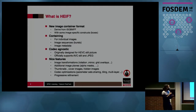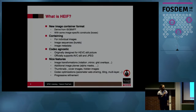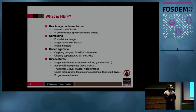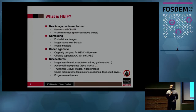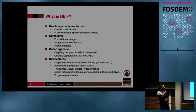So, what is HEIF? HEIF is a new image container format. It's derived from ISO BMFF, with some image-specific constructs and boxes. It may contain individual images, image sequences like bursts, or image metadata. It's codec agnostic, originally designed for HEVC still pictures, and officially supports HEVC still and JPEG.